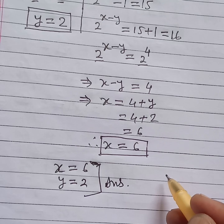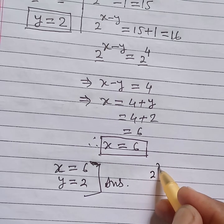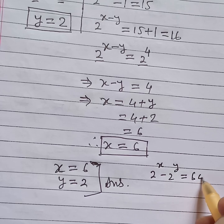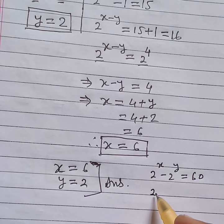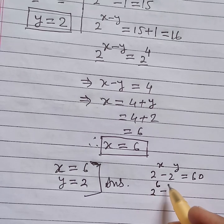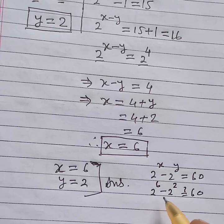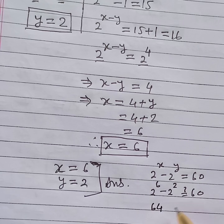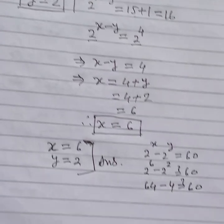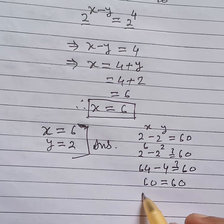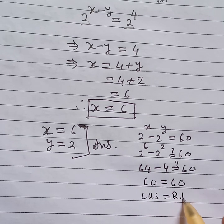Now, verify. The original equation is 2 to the power x minus 2 to the power y is equal to 60. Substituting x equals 6 and y equals 2: 2 to the power 6 minus 2 to the power 2 is equal to 60. Yes, 64 minus 4 is 60. Left hand side is equal to right hand side.